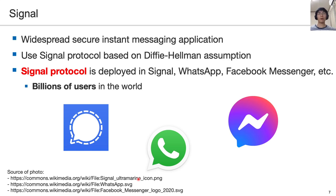In this work, we focus on Signal. Signal is a widespread secure instant messaging application. To encrypt messages, Signal uses the Signal protocol based on the Diffie-Hellman assumption. The Signal protocol is deployed in a lot of messaging applications, such as Signal, WhatsApp, and Facebook Messenger. Hence, billions of users use the Signal protocol in the world.